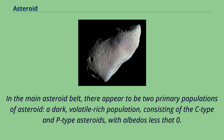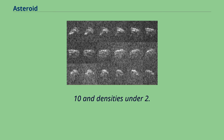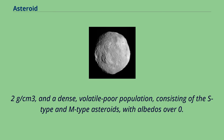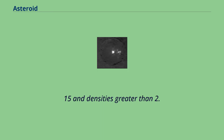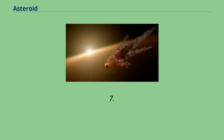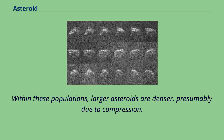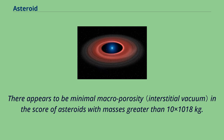In the main asteroid belt, there appear to be two primary populations of asteroids: a dark, volatile-rich population consisting of the C-type and P-type asteroids, with albedos less than 0.10 and densities under 2.2 g/cm³; and a dense, volatile-poor population consisting of the S-type and M-type asteroids, with albedos over 0.15 and densities greater than 2.7. Within these populations, larger asteroids are denser, presumably due to compression. There appears to be minimal macro-porosity in the cores of asteroids with masses greater than 10×10¹⁸ kg.